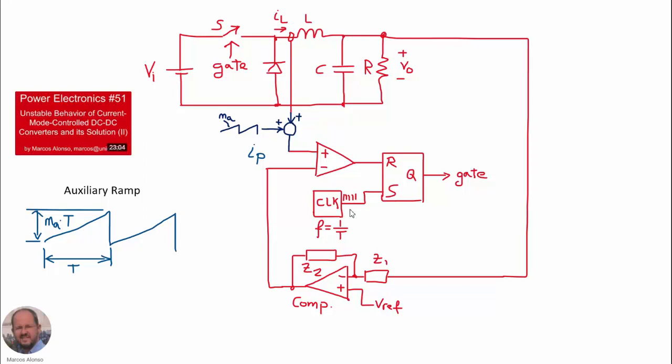In closed loop operation, we measure the output voltage and send this information into the error amplifier, which is going to generate the reference for the peak current of the inductor. So this is what we need to implement in our controller.